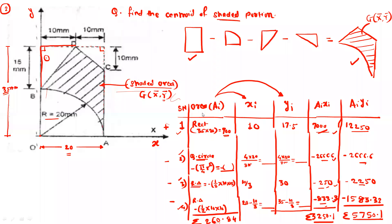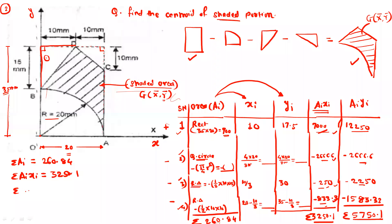From this table, we will get the value for summation of the area. So summation Ai is equal to 260.84. Then summation Ai*xi is equal to 3250.1. Then summation Ai*yi is equal to 5750.1.